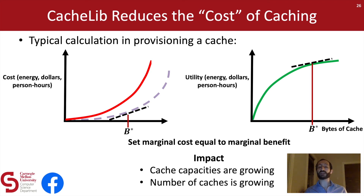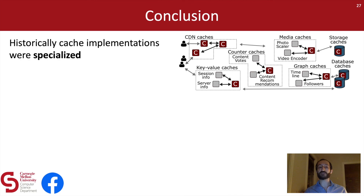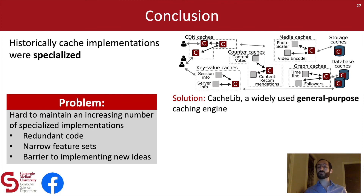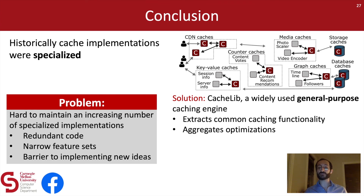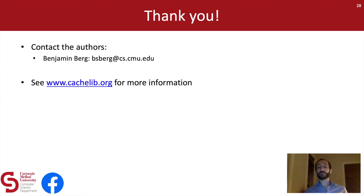To conclude, today I talked about the wide variety of caching use cases at Facebook which were historically maintained as specialized cache implementations. The problem with this approach was redundant code, systems with narrow feature sets, and a barrier to the uptake of new caching ideas. Our solution was to deploy CacheLib, a general purpose caching engine that extracts common functionality from across caching use cases, aggregates optimizations from across engineering teams, reduces the cost of caching, and now supports dozens of caching systems at Facebook. Thank you for listening.